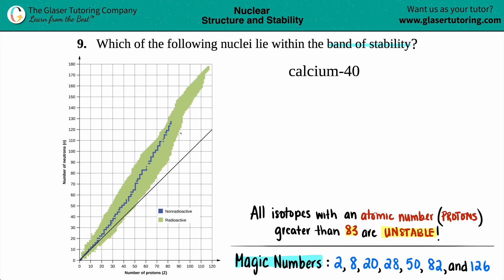But in order to find out whether we're in the band of stability, always know how many protons and neutrons you have in your atom. So the easiest way to do this is to write it out into that notation. We have a calcium, Ca.